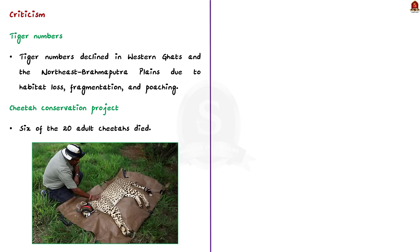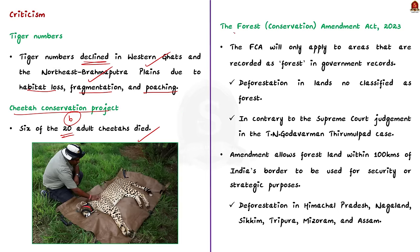Coming to the criticisms: the first criticism is that even though tiger numbers have increased in some parts of the country, they have declined in the Western Ghats and Northeast Brahmaputra plains due to habitat loss, fragmentation, and poaching. The second criticism is the cheetah conservation project — 6 of the 20 adult cheetahs imported from Namibia and South Africa have died. The next criticism is towards amendments made to the Forest Conservation Act, which will only apply to areas recorded as forest in government records, potentially leading to deforestation of unrecorded forests.